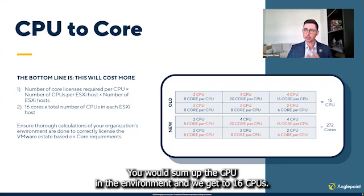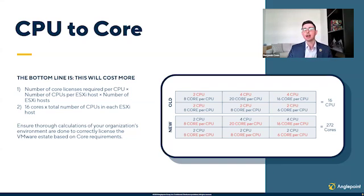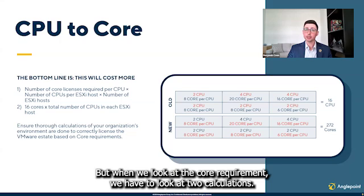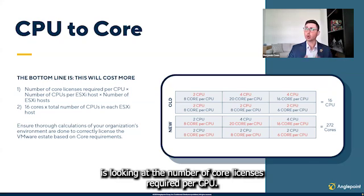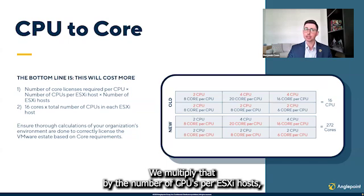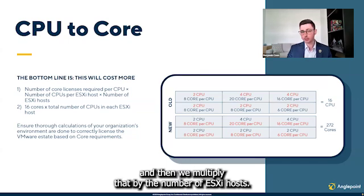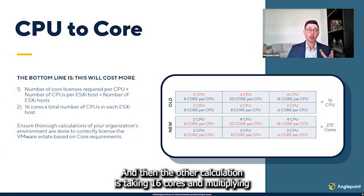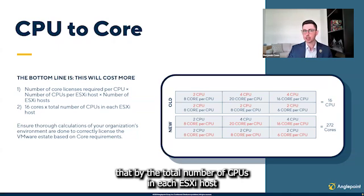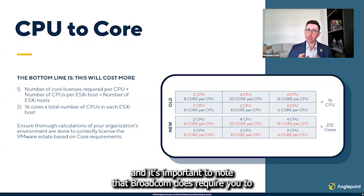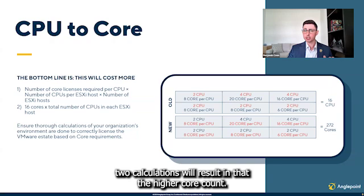You would sum up the CPUs in the environment and we get to 16 CPUs. But when we look at the core requirement, we have to look at two calculations. The first calculation is looking at the number of core licenses required per CPU, multiply that by the number of CPUs per ESXi host, and then multiply that by the number of ESXi hosts. The other calculation is taking 16 cores and multiplying that by the total number of CPUs in each ESXi host. It's important to note that Broadcom does require you to take whichever of the two calculations will result in the higher core count.